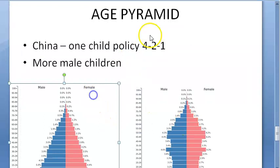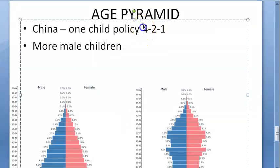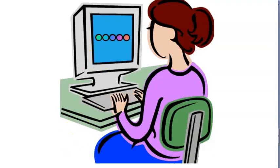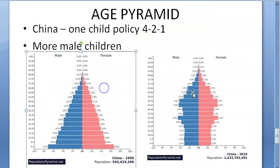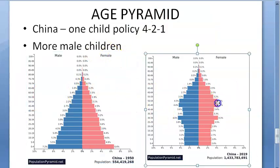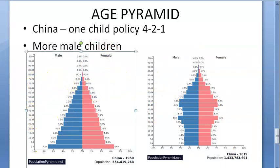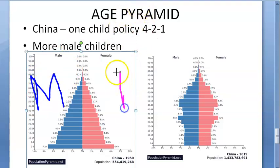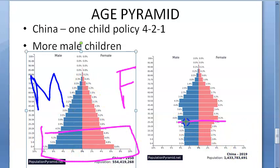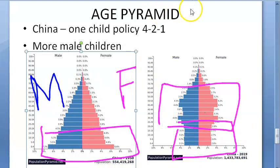China had the one-child policy, so the ratio was four grandparents, two parents, one child. More male children were being produced because families didn't want daughters. In 1950 China had a very broad base, but by 2019 the base is very narrow and the population is concentrated in the middle — an aging population.